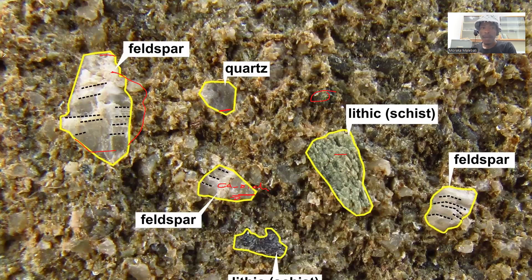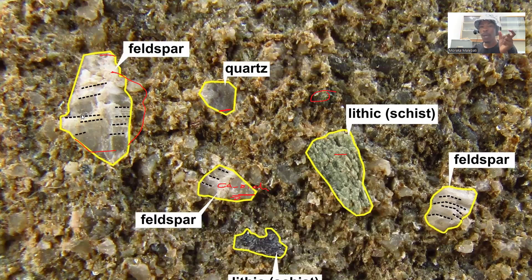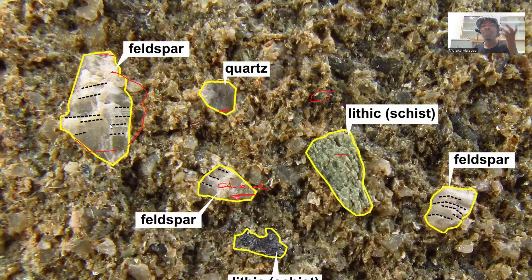From a sandstone thin section you get to see this composition, which is why sandstone can be classified according to its composition. By the look of this rock you can see that it has more feldspar. If the matrix is between 0 and 15 percent then it is an arenite, and since we have more feldspar than quartz or lithics, we can say it is an arkosic arenite.